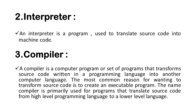A compiler is a computer program or set of programs that transforms source code written in a programming language into another computer language. The most common reason for wanting to transform source code is to create an executable program. The name compiler is primarily used for programs that translate source code from a high-level programming language to a lower level language.